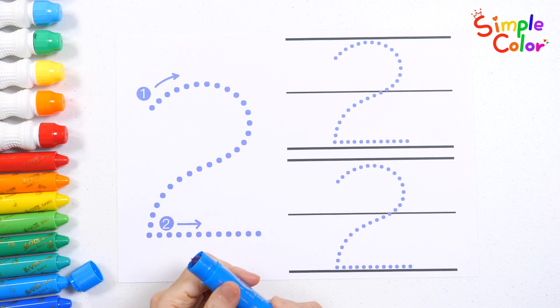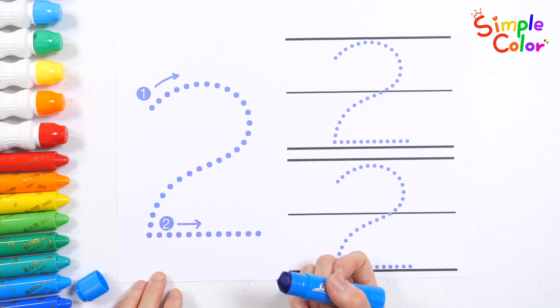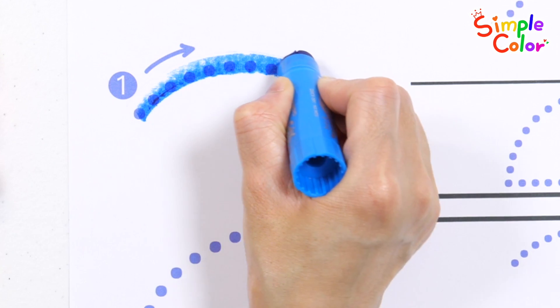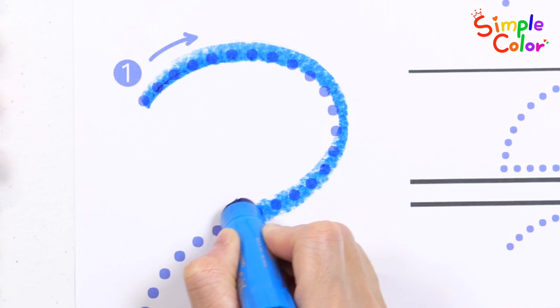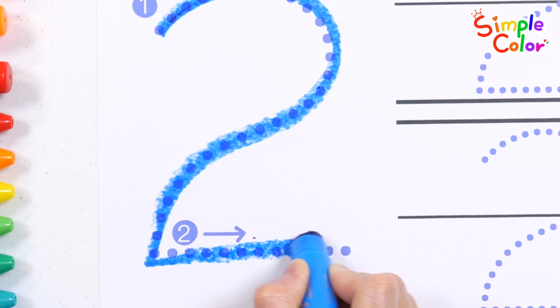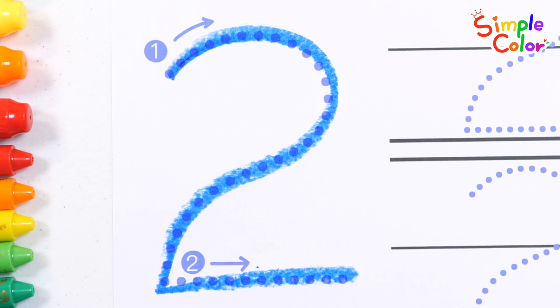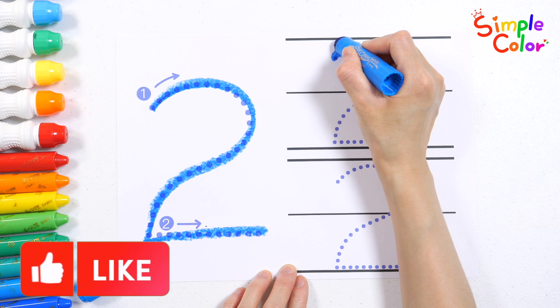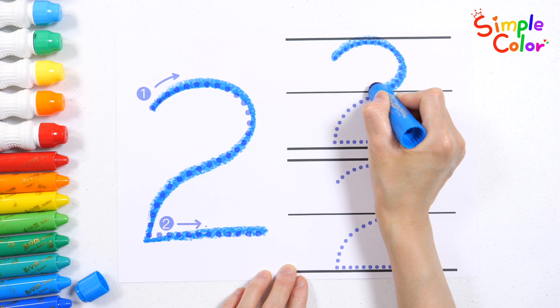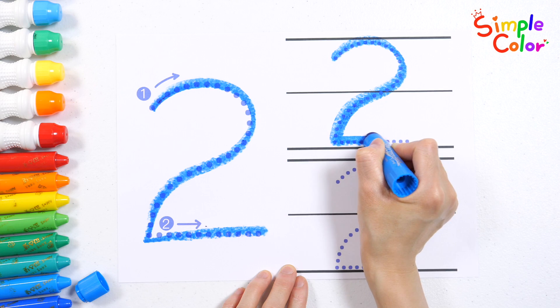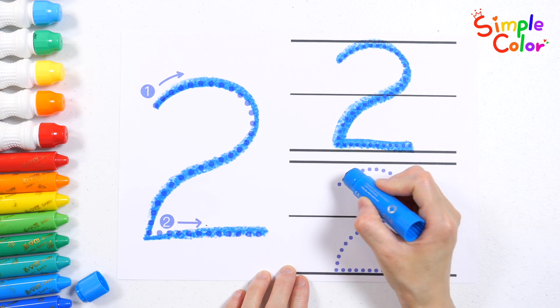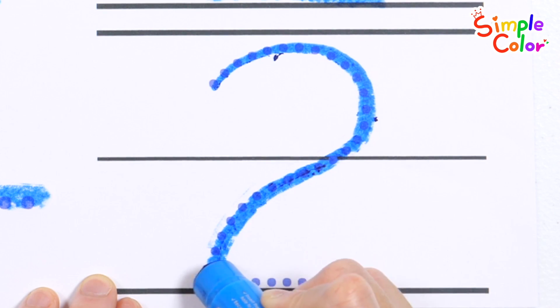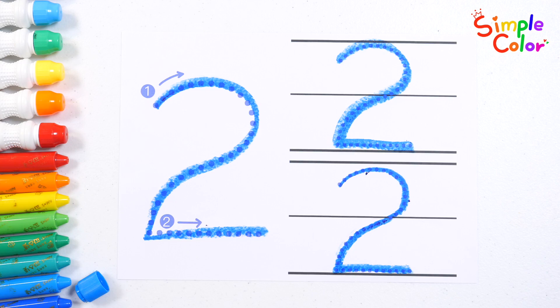Shall we write the number 2 by following the arrows? 2. Let's practice writing the number 2 two more times. Two, good job!